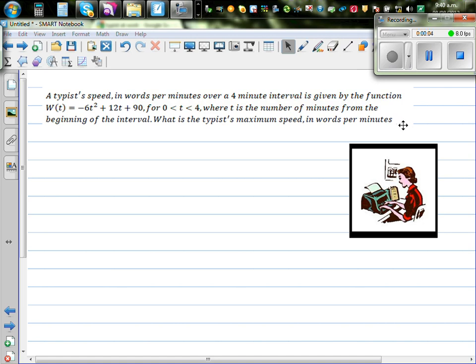A typist's speed in words per minute over a 4 minute interval is given by the function W(t) = -6t² + 12t + 90 for t between 0 to 4, where t is the number of minutes from the beginning of the interval. So this is a 4 minute interval.